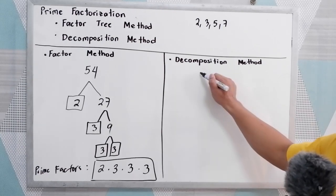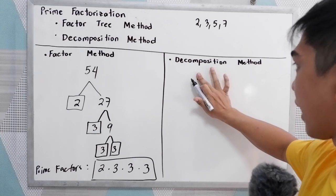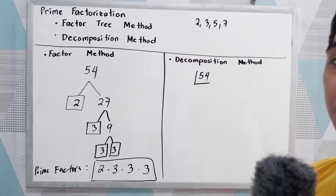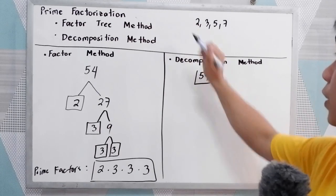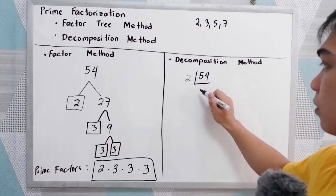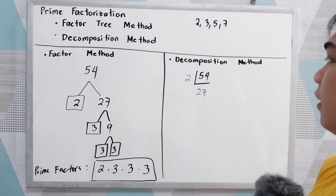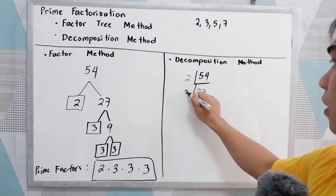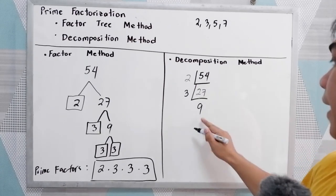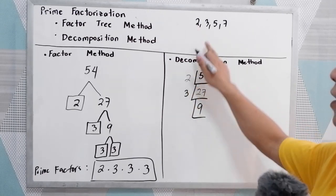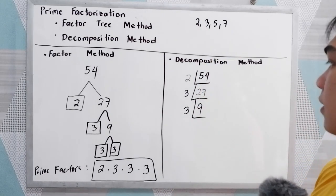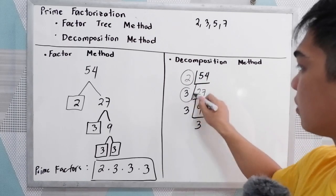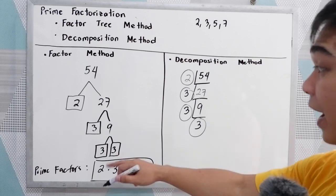Now, how do we use the decomposition method? Write 54 and use continuous division. 54 is divisible by 2, so write 2 here. 54 divided by 2 is 27. Next, 27 is not divisible by 2, so proceed to 3. 27 divided by 3 is 9. 9 divided by 2 cannot be done, so proceed to 3. 9 divided by 3 is 3. Then 3 divided by 3 is 1. Circle the divisors 2, 3, 3, and 3 — those are the prime factors of 54.